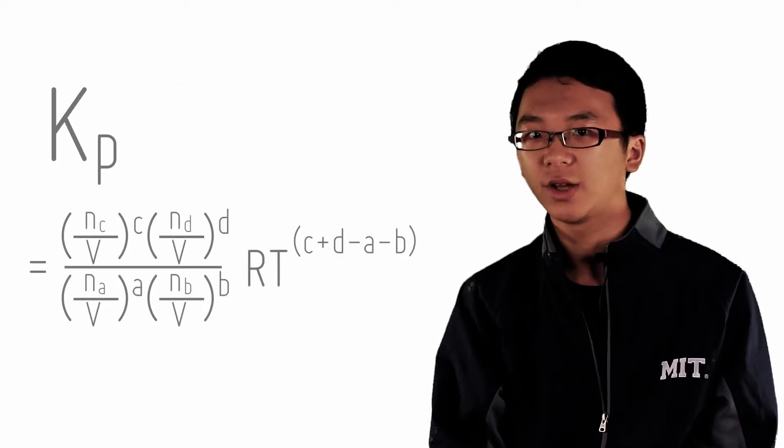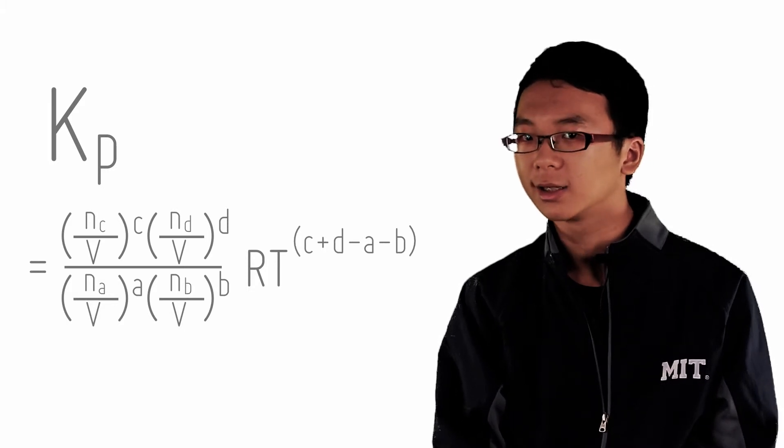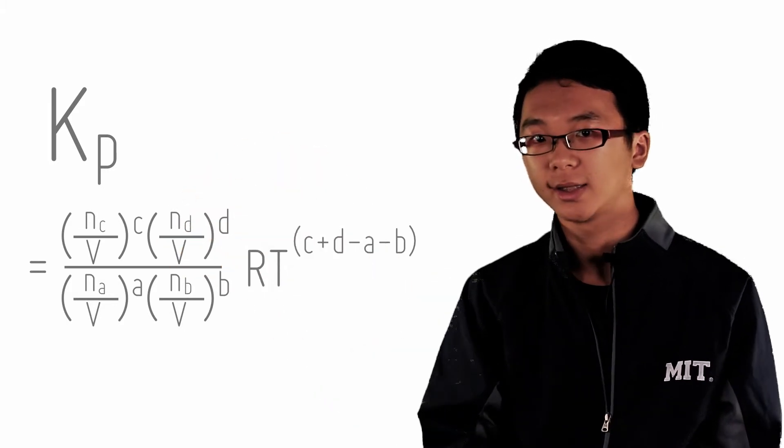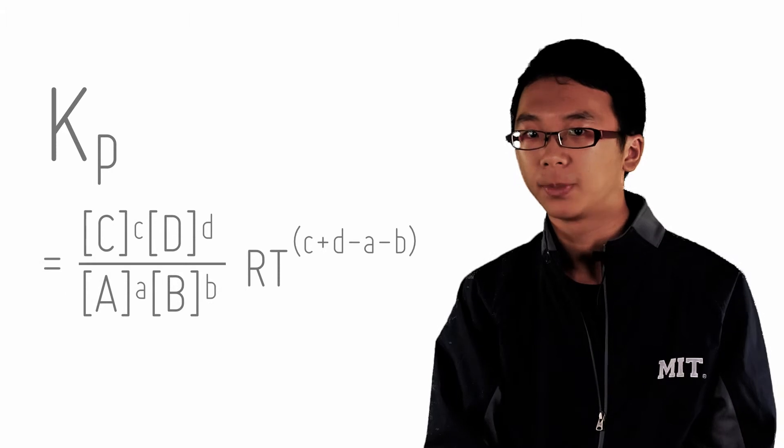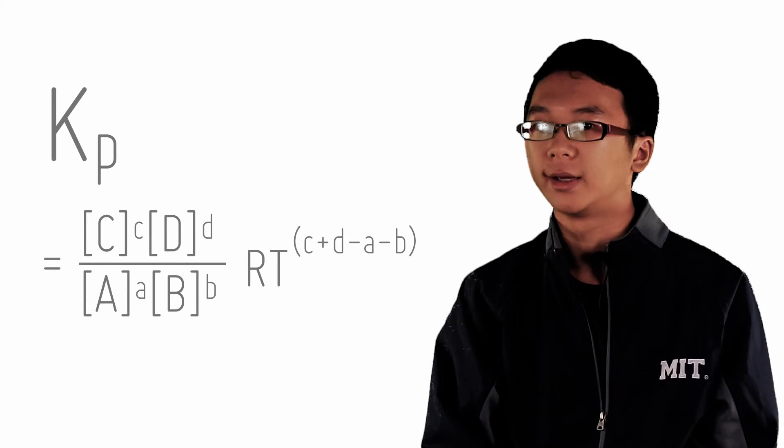So we've taken out RT from each of the partial pressures. Combining all these RTs, we get this neat little expression. Essentially, Kp equals Kc multiplied by RT raised to C plus D minus A minus B.